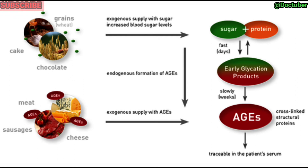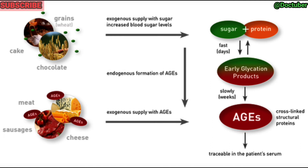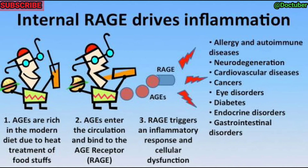Apart from exogenous supply of AGEs from cooked food, AGEs can also form inside our body due to increased blood sugar levels caused by diabetes or intake of carbohydrate-rich foods like cake, grains, and chocolates. Increased sugars in our body attach to various proteins, causing the formation of early glycation products, and over weeks slowly there is formation of cross-linked structural proteins called Advanced Glycation End Products.